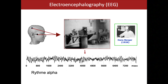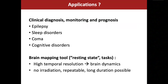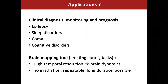EEG technology has evolved a lot and is now used for a wide range of clinical applications — diagnosing, disease monitoring, and prognosis — first of all in epilepsy, but also in sleep disorders, disorders of consciousness, different types of comas, and a large spectrum of cognitive disorders. It's also used a lot as a research tool, as a brain mapping tool to map resting states — the brain activity when we are not engaged in a specific task — but also for measuring responses to different stimuli.